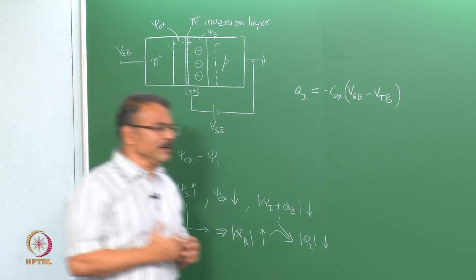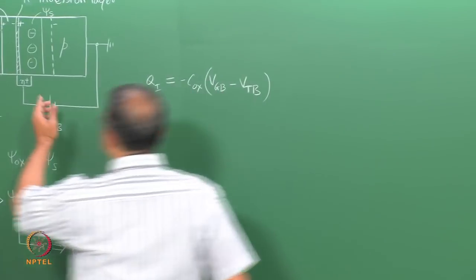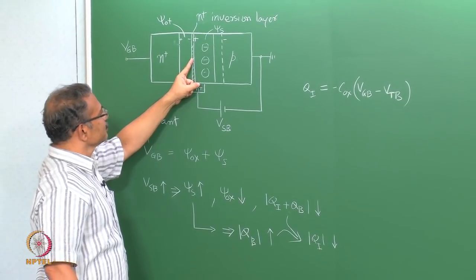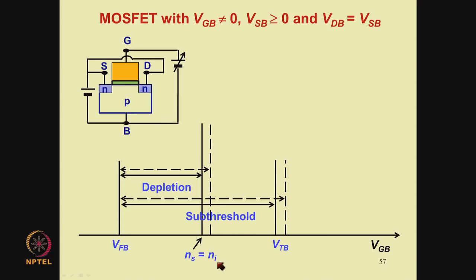This is how you conclude that VTB increases. Just as the inversion charge reduces, in general the electron concentration at the surface reduces when VSB is applied. This means that a condition such as Ns equal to Ni would appear at a higher value of VGB — and that is what is shown here. So we conclude that the depletion region widens and the subthreshold region widens because of application of VSB. Threshold voltage also increases when you apply VSB.